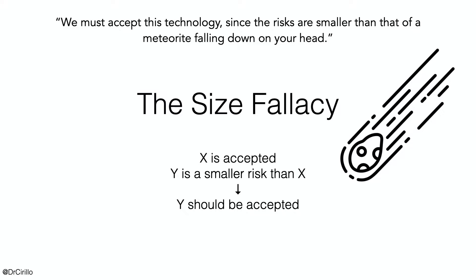In these days, we are considering the very big problem of the COVID-19 pandemic, and every day in the media, on TV, you can listen to people that fall into the size fallacy. A common sentence that represents the size fallacy is the following: we must accept this or that technology, since the risks are smaller than that of a meteorite falling down on your head. So in practice, in the size fallacy, one compares risks that cannot be compared. Risks are, in fact, not free-floating objects, and unrelated risks should not be compared.